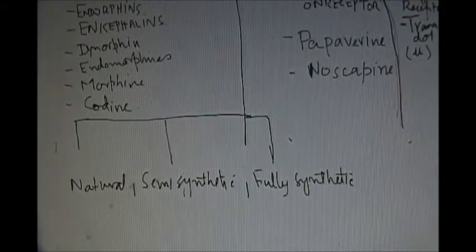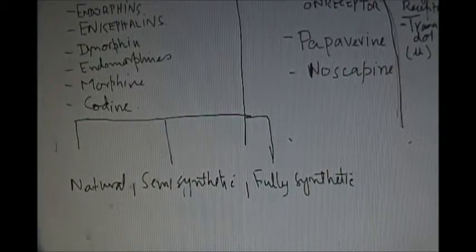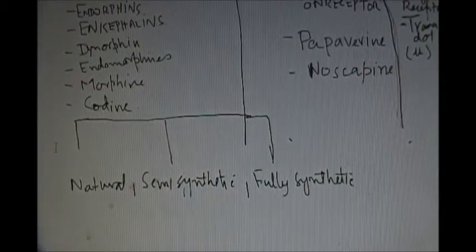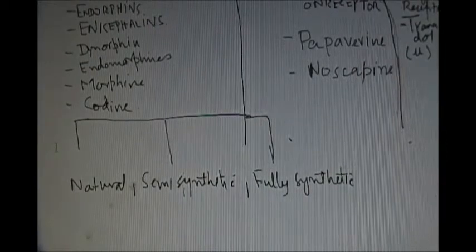I included morphine and codeine in the endogenous list because some morphine and codeine are produced in the body.